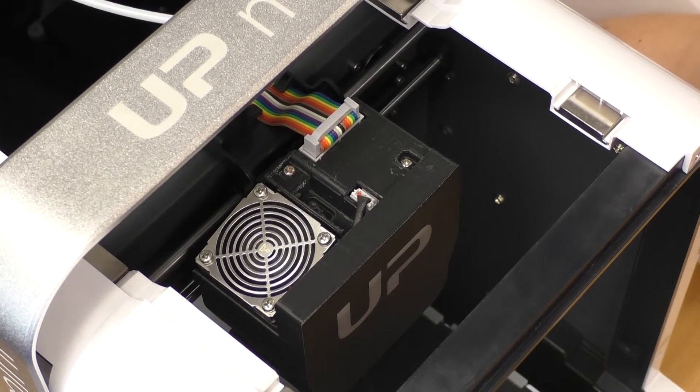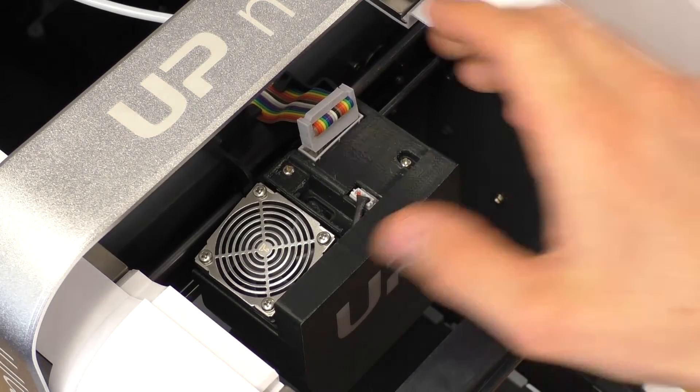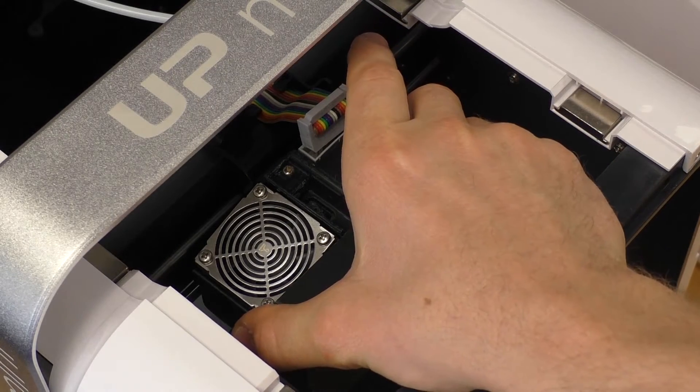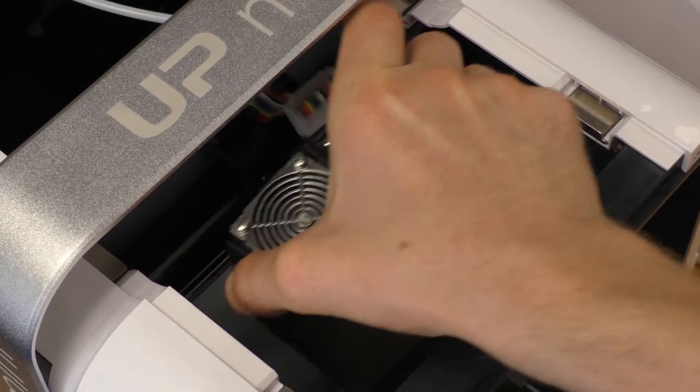Next turn your printer off at the back and to remove the printhead unplug the rainbow ribbon cable from the top, grab the printhead on the sides being careful because it will still be hot, give it a bit of a wiggle and lift upwards and out.